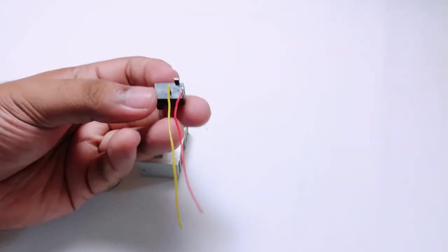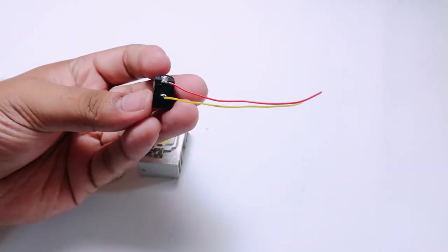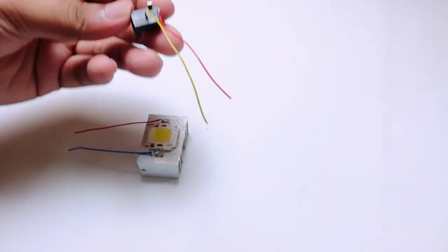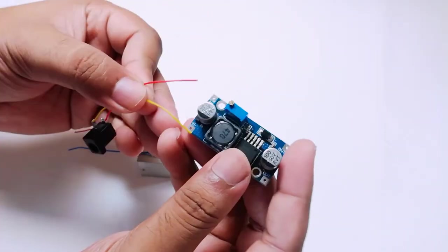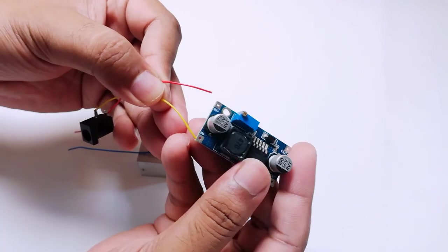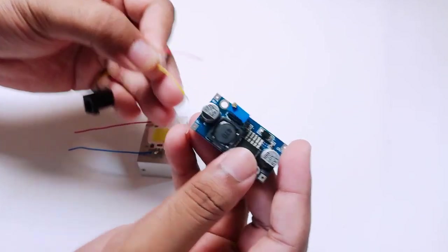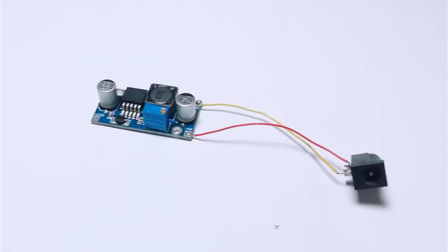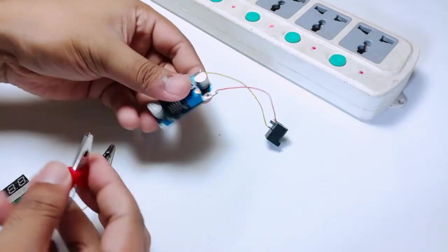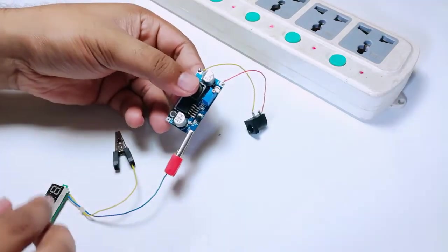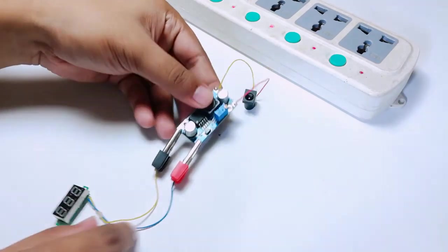Solder wires to the connector and the LED. Then connect the boost converter to the connector. After soldering, it should look like this. I'm going to check the voltage output of the boost converter using a small voltmeter.